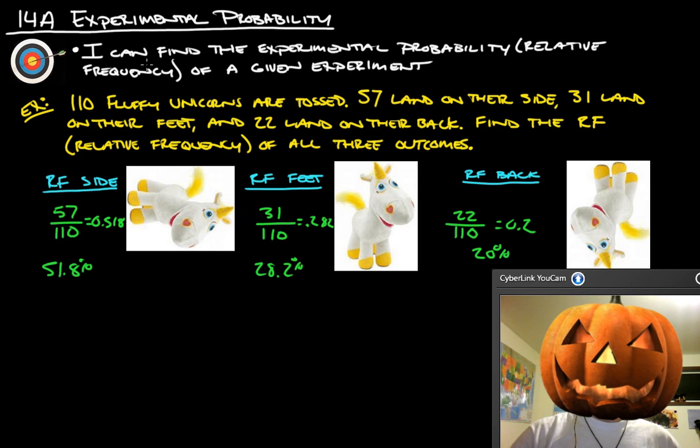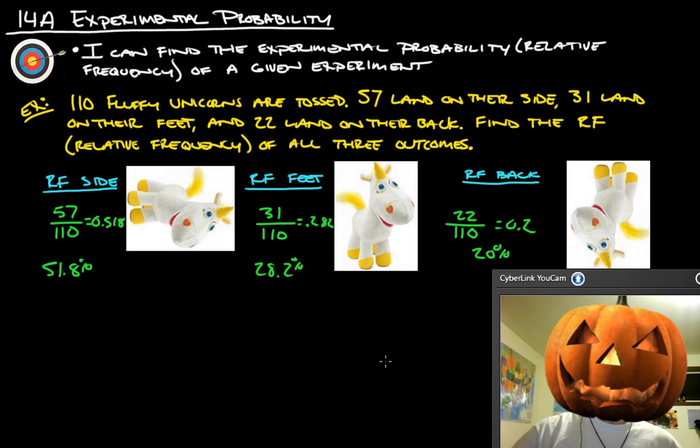So now you should be able to say I can find the experimental probability, which is the relative frequency of a given experiment. Alright, if you have any questions, please ask. Thanks.